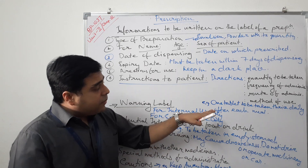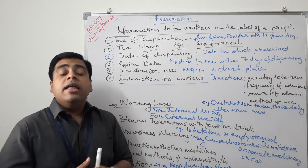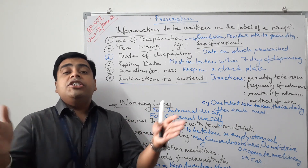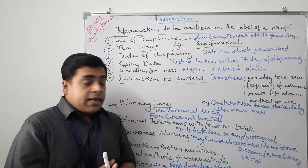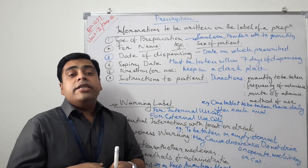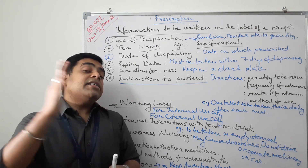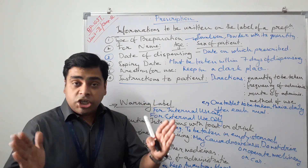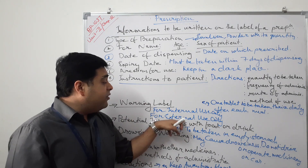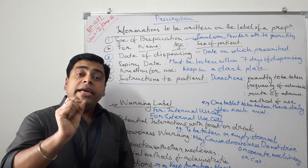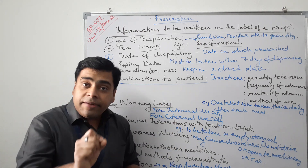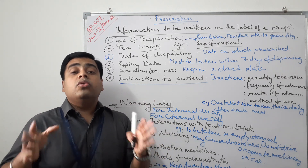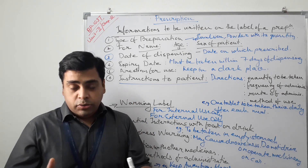Next — warnings. Different types of warnings are very important and depend on the preparation type. The basic differentiation is whether the preparation is for internal use, oral use, external use, or skin surface use. It should be properly mentioned: 'for internal use only,' 'for external use only,' 'for nasal use only' — this type of specification is called a warning, and it must be written on the label.